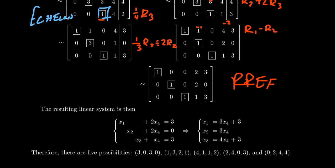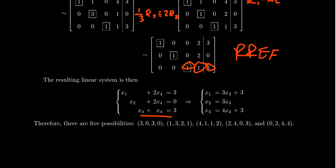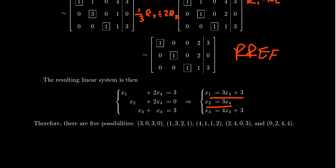Switching back to a system of linear equations: x1 + 2x4 = 3, x2 + 2x4 = 0, and x3 + x4 = 3. As predicted, x4 is a free variable. Solving for the dependent variables: x1 = 3x4 + 3, x2 = 3x4, and x3 = 4x4 + 3. Note that moving −2x4 to the right gives +3x4 mod 5, and −x4 becomes 4x4 mod 5.